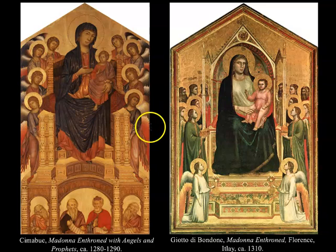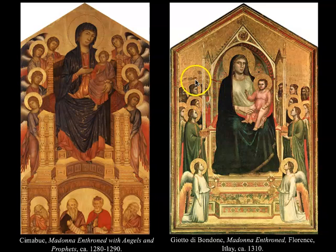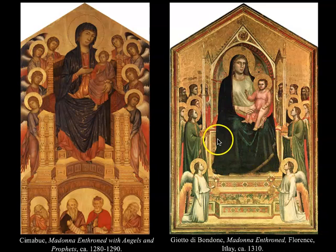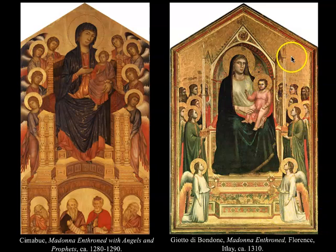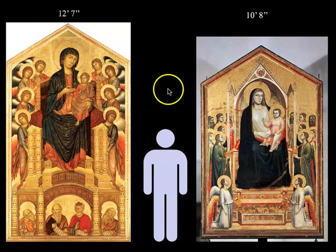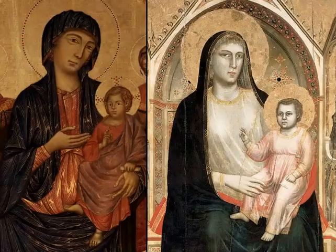All the figures' faces look very similar — even Mary's looks the same as all of the little angels. The space is also a bit off: although it looks like Mary is sitting on a realistic throne with some sense of perspective, you get the feeling that if she tried to step off she would just fall into oblivion — where is the ground? When you see the change from Cimabue to Giotto, you see why Giotto is considered the father of the Renaissance — his faces are sculpted much more naturalistically, the Virgin Mary looks like she has weight and form underneath her fabric, and the drapery is more realistic.